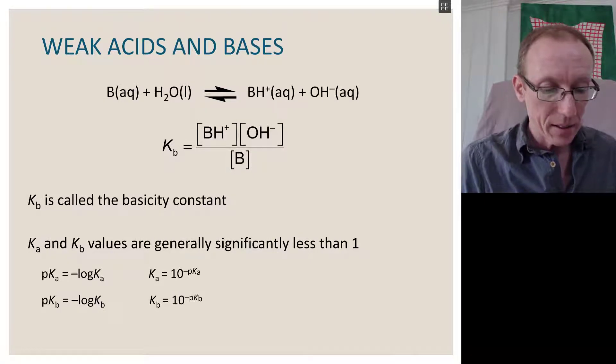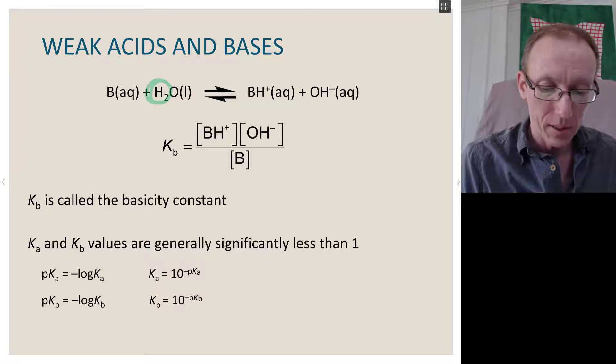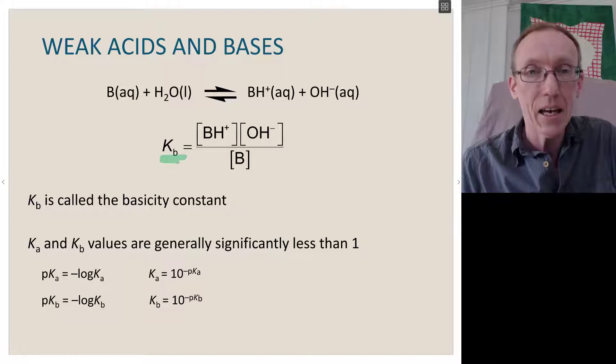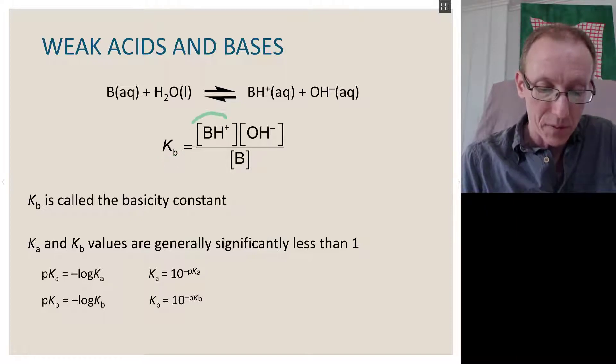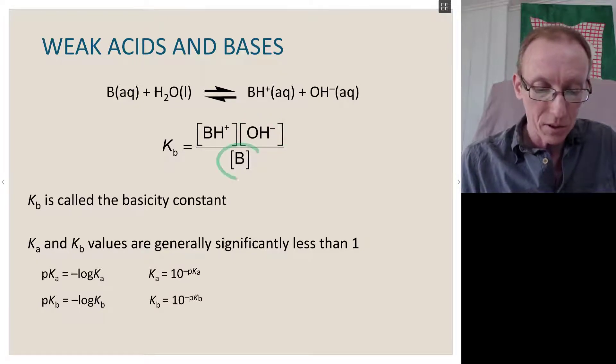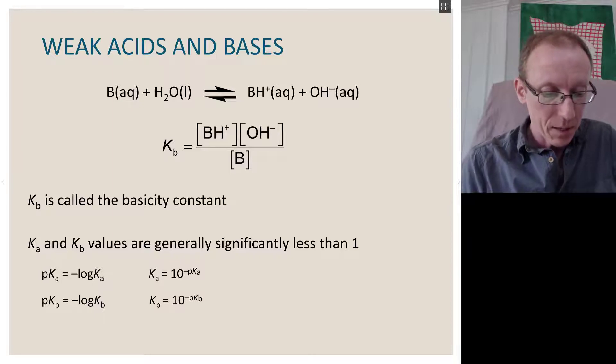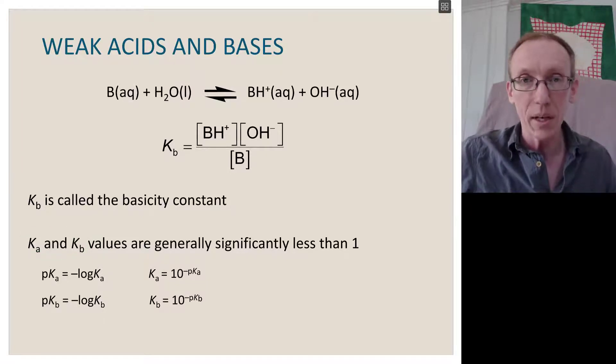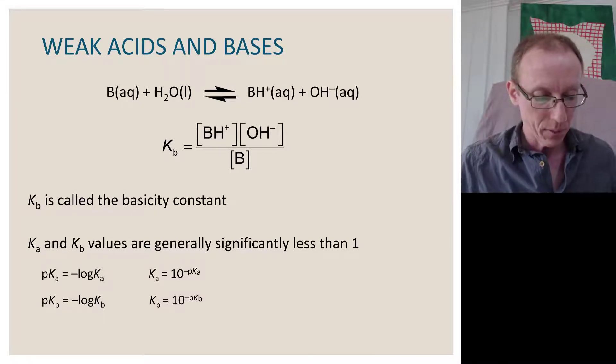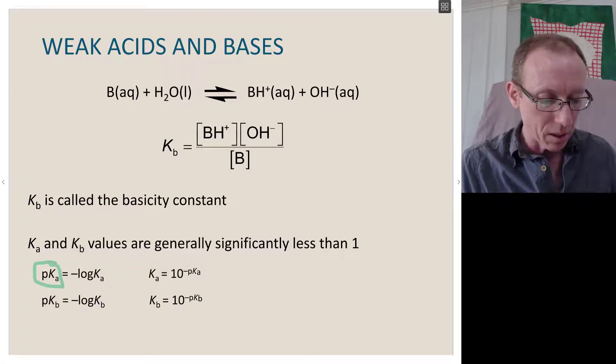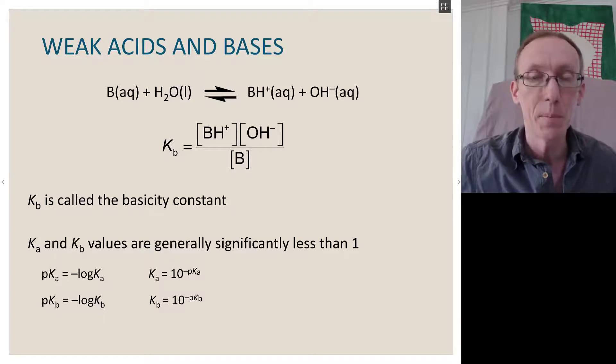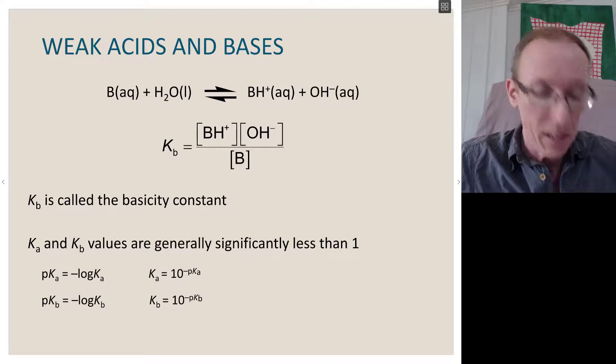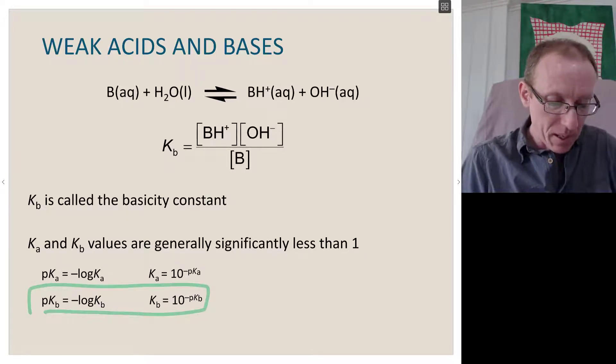If we have a weak base in an aqueous environment, we can take a proton off water to generate OH-. We have equilibrium constant which is Kb, the basicity constant, which is the concentration of the conjugate acid of that weak base times the concentration of OH-, hydroxide ion, over the concentration of the weak base that we started with. The Ka and Kb values are generally significantly less than 1, because we're dealing with weak acids and bases that aren't dissociating much. We can look at this in log terms. The pKa of a weak acid is negative log of the Ka, so Ka is 10 to the power of minus pKa. We can do the same treatment for pKb and Kb.